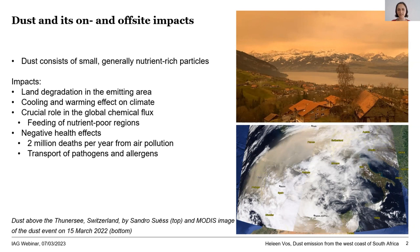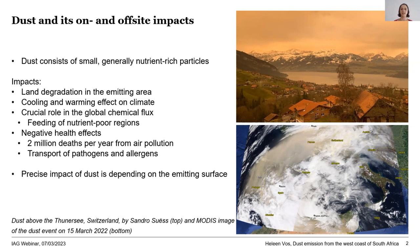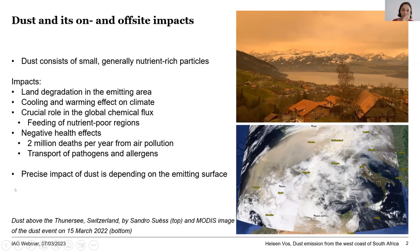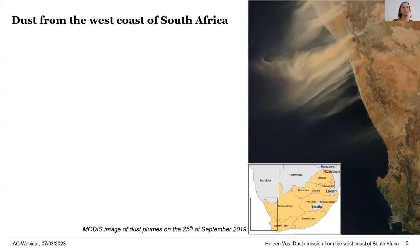The exact effect depends a lot on where the dust is coming from and going to. There is a general interest in understanding what surfaces are emitting dust and what factors control that emission. Some dusty regions are understood better than others. This brings me to dust from the West Coast of South Africa. This dust was observed by a study in 2017 and can be seen in satellite imagery, but it has not been further studied — we don't know what surfaces are emitting it or what's controlling it, which is what we wanted to address.